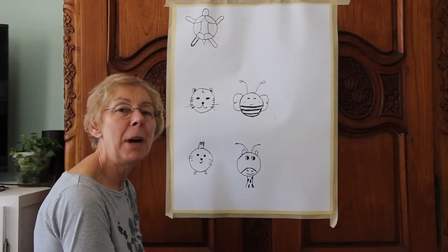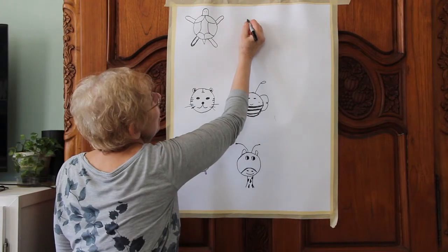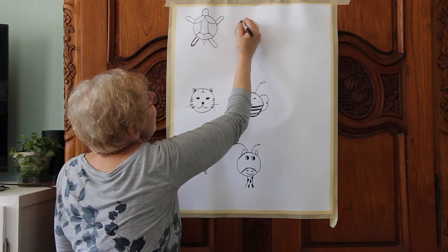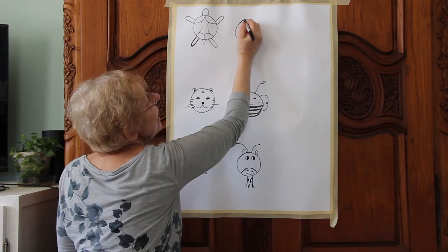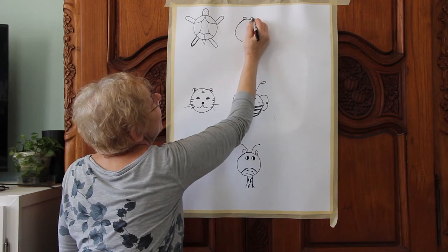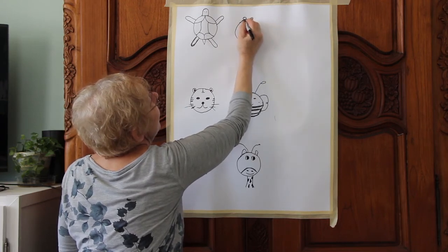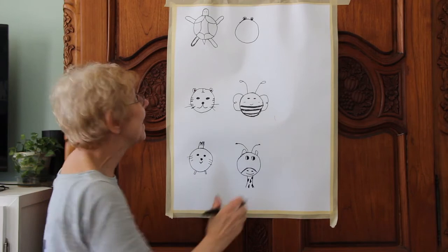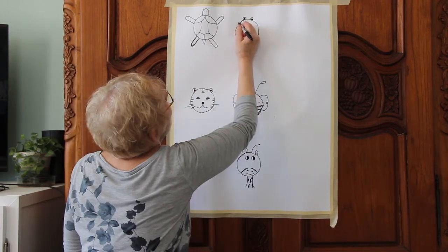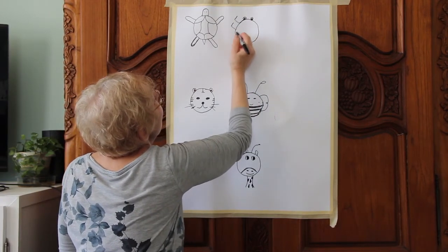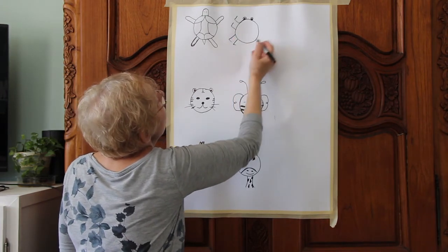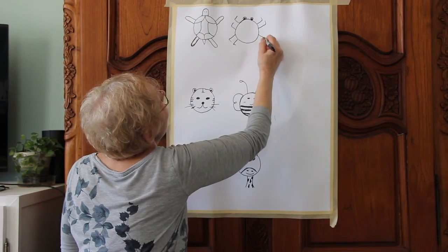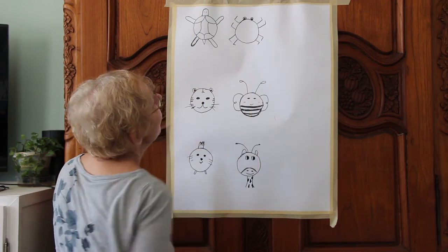Next, we'll draw a ladybug. So, again we need a circle. First thing we'll do is put eyes on it. What else does a ladybug have? Legs. So, we'll draw two up here. And two down here. There.